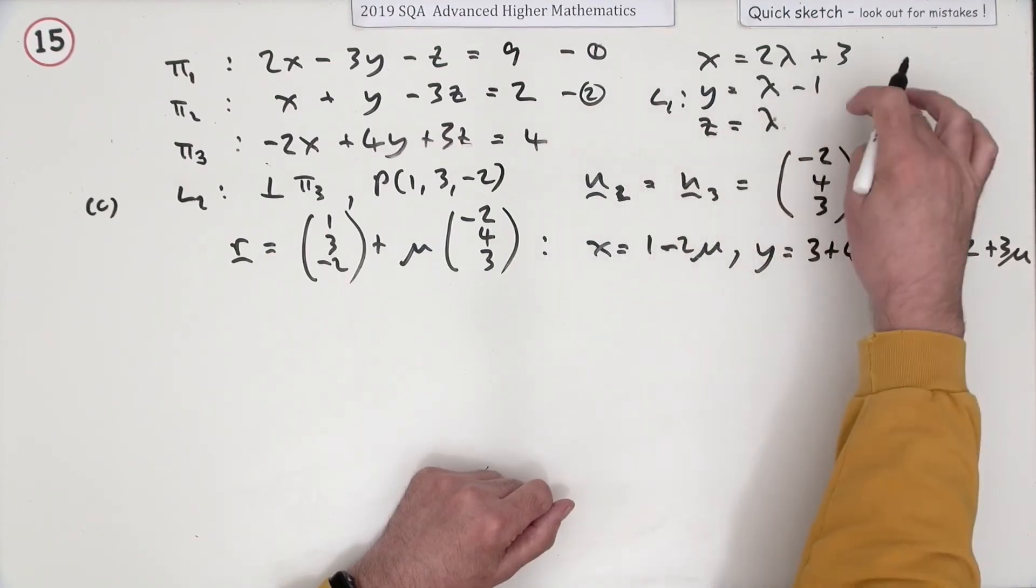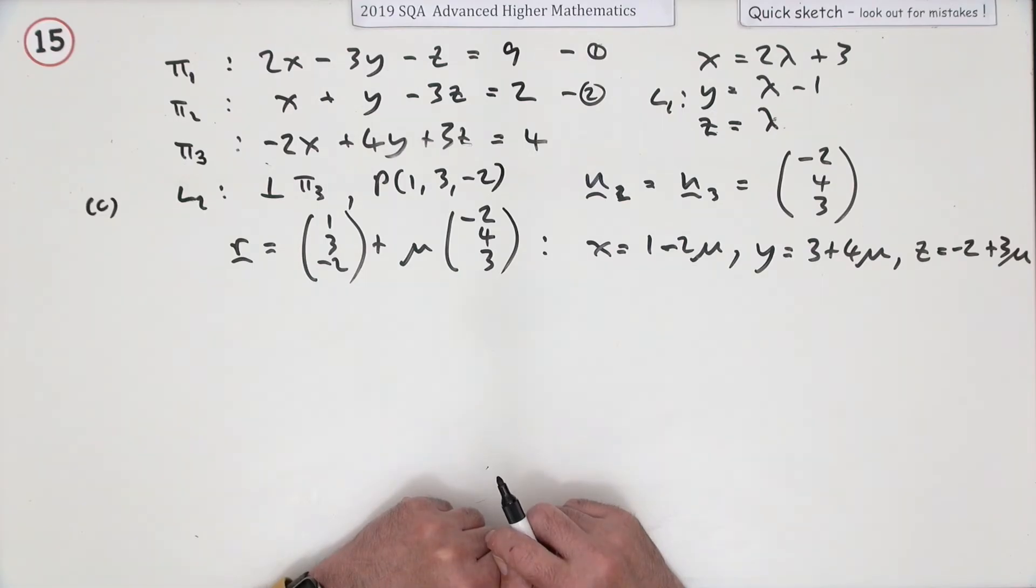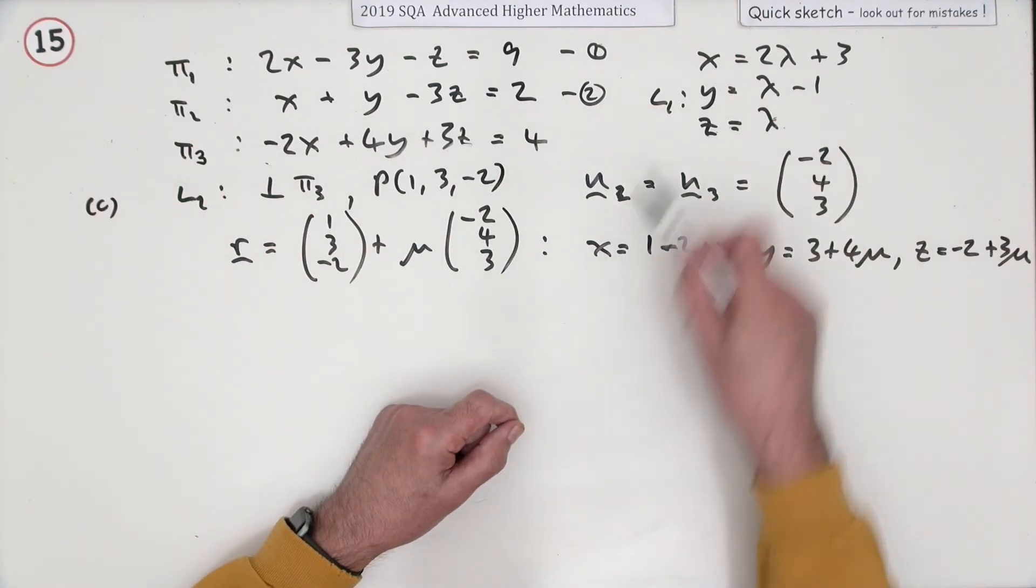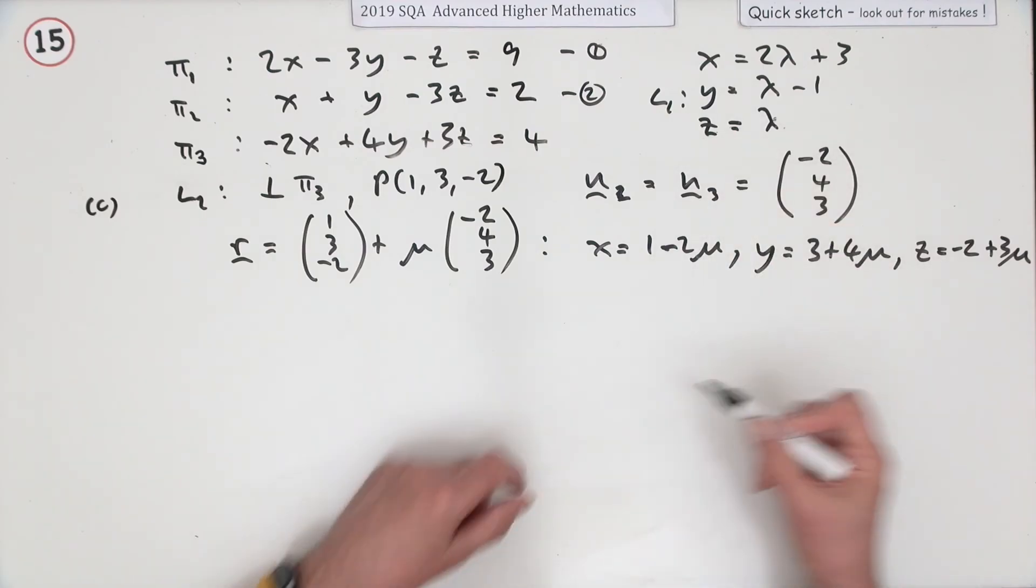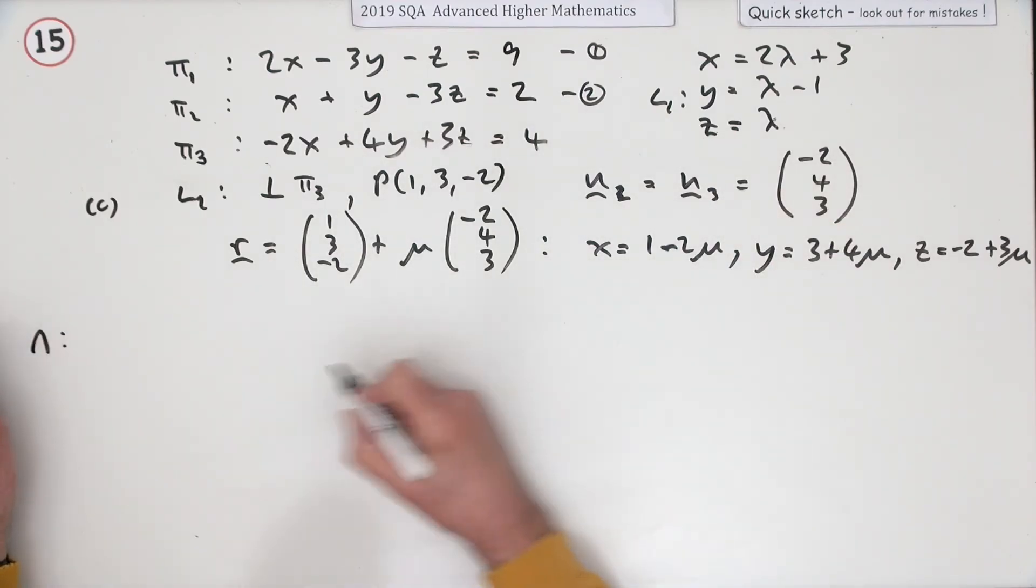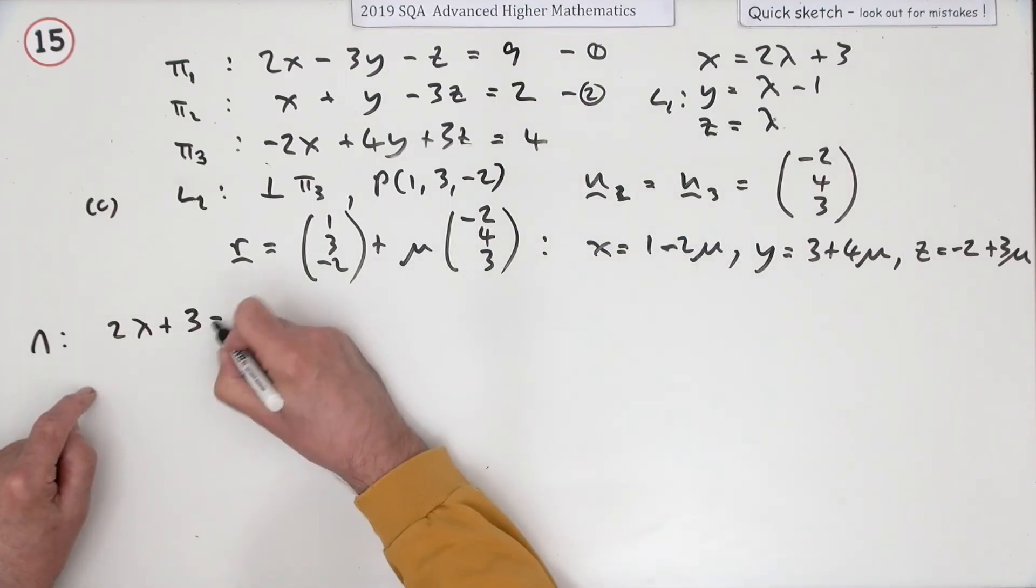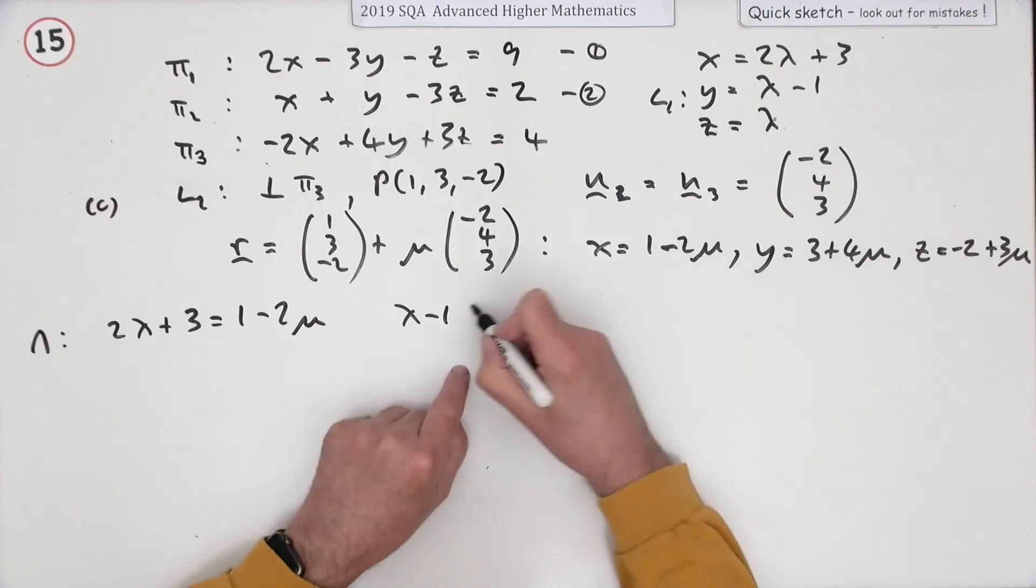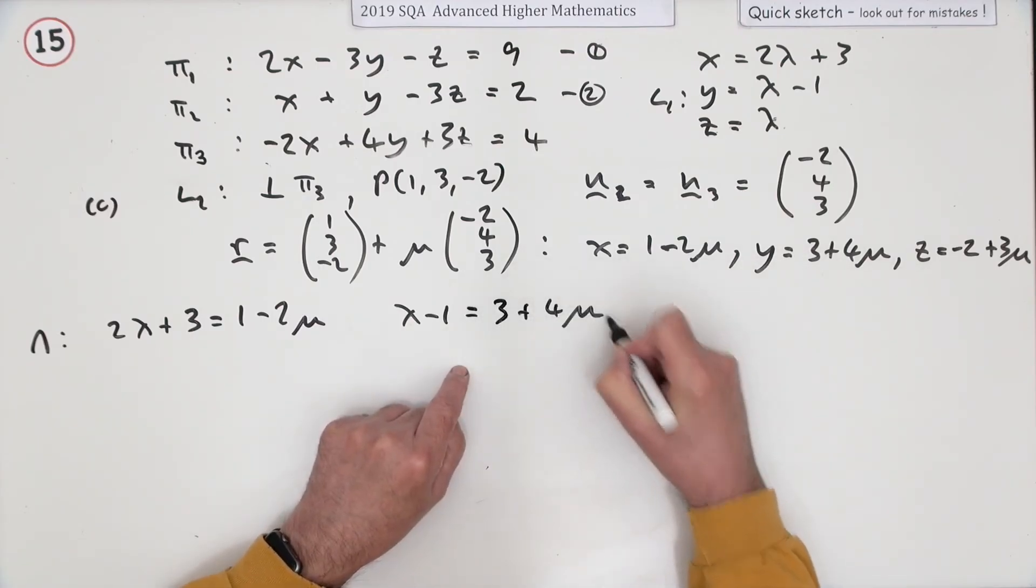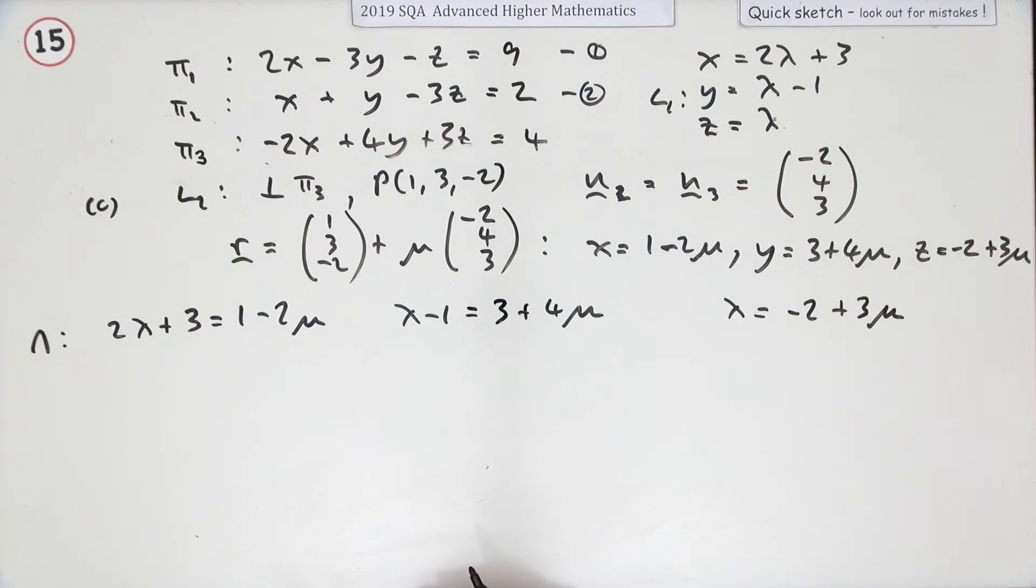So there's the two lines. Parametric equations of line one, parametric equations of line two. Do they intersect? Well, if they intersect, these equations have to be solved simultaneously, such that the X equals the X, the Y equals the Y, and the Z equals the Z. So we just form that. If you're looking for an intersection, you have to have this thing. X's: 2λ + 3 should equal 1 - 2μ for the X's. λ - 1 should equal 3 + 4μ for the Y's. And λ should equal -2 + 3μ for the Z's.